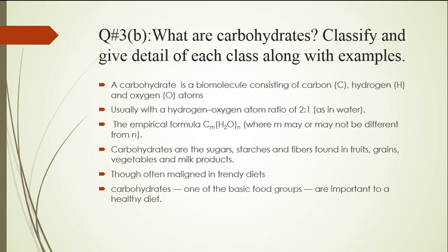Now come to question 3 part B: What are carbohydrates? Classify and give details of each class along with examples. A carbohydrate is a biomolecule consisting of carbon, hydrogen, and oxygen atoms, usually with the hydrogen to oxygen atom ratio of 2:1, as in water (H₂O). The empirical formula is a general formula for carbohydrates. Carbohydrates are the sugars, starch, and fibers found in fruits, grains, vegetables, and milk products. Though often maligned in trendy diets, carbohydrates are one of the basic food groups important to a healthy diet.